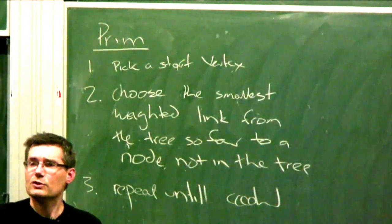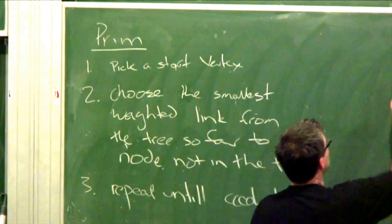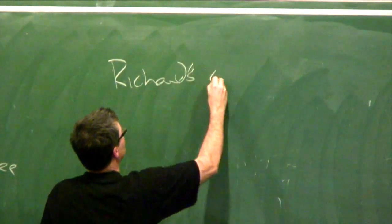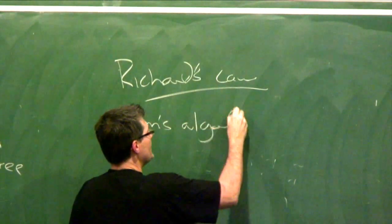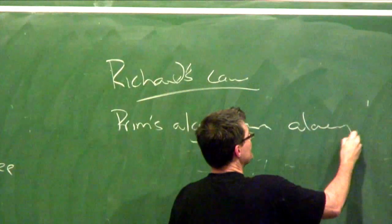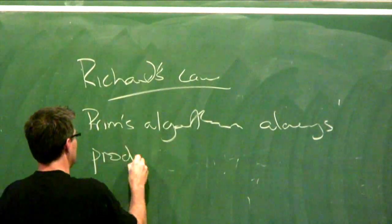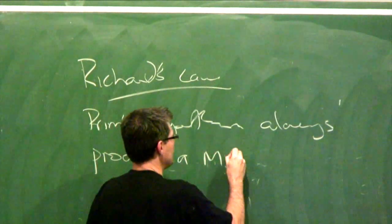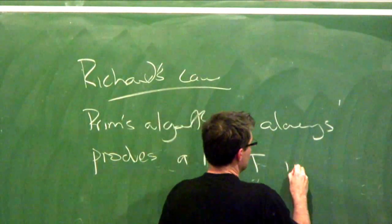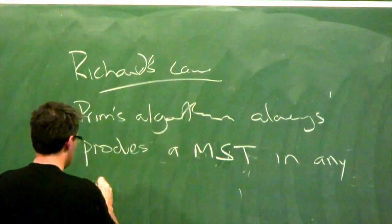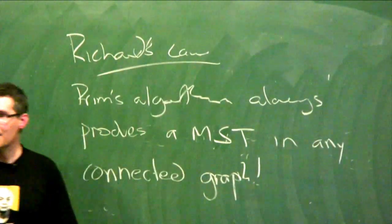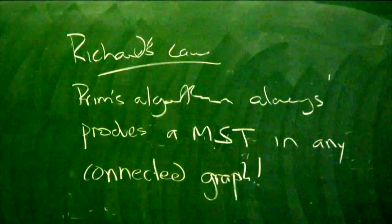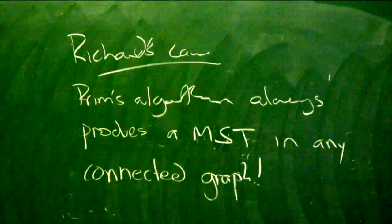That's Prim's algorithm. Now, here's Richard's law: Prim's algorithm always produces a minimum spanning tree in any connected graph. It's named after me, actually. I invented that, Richard's law. So, we've got Prim's algorithm and Richard's law.